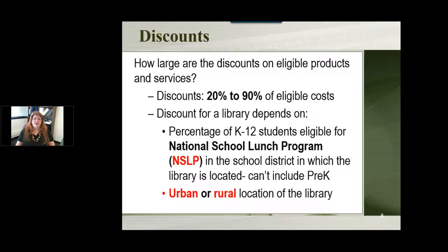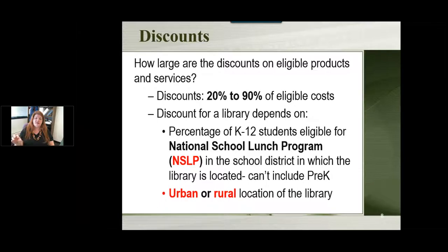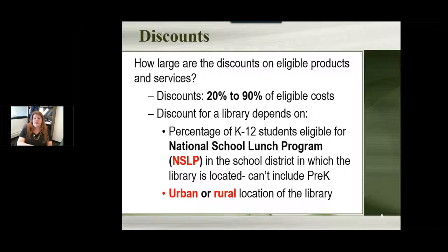After you know that number, you combine it with whether your library is considered urban or rural, based on U.S. Census data. The school district to use is the one in which the library is physically located — not the districts you might serve nearby, but geographically where the library sits. That's the school district's numbers you look at for doing this calculation.